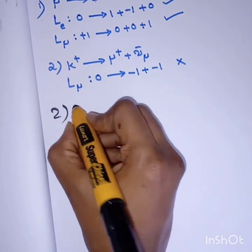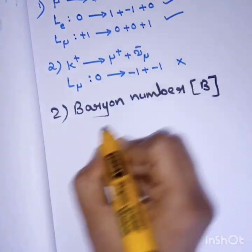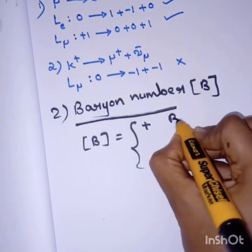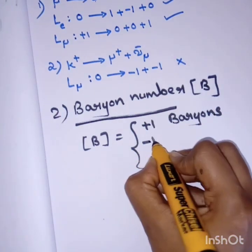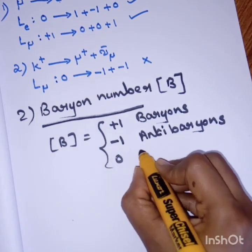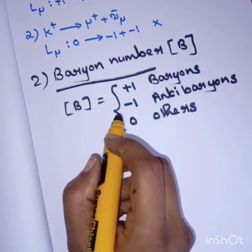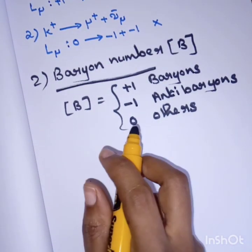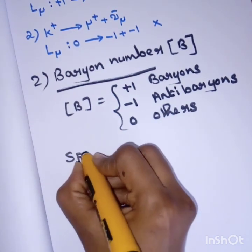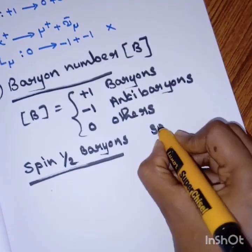Next is baryon number, denoted as B. It is the same as in the case of leptons: baryon number B is plus one for baryons, minus one for antibaryons, and zero for others. Baryon is a class of hadrons. Hadrons are divided into two groups: two quarks are called mesons, and three quarks are called baryons. Baryons are further classified into spin-half baryons and spin-three-halves baryons.